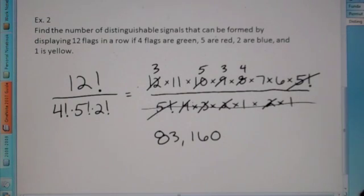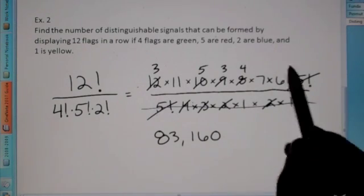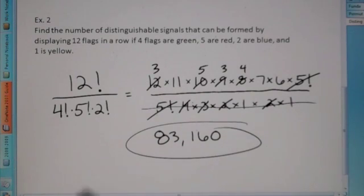And therefore, we can just reduce the rest. Okay? And then whatever's remaining on top, multiply, and we get eighty-three thousand one hundred and sixty.